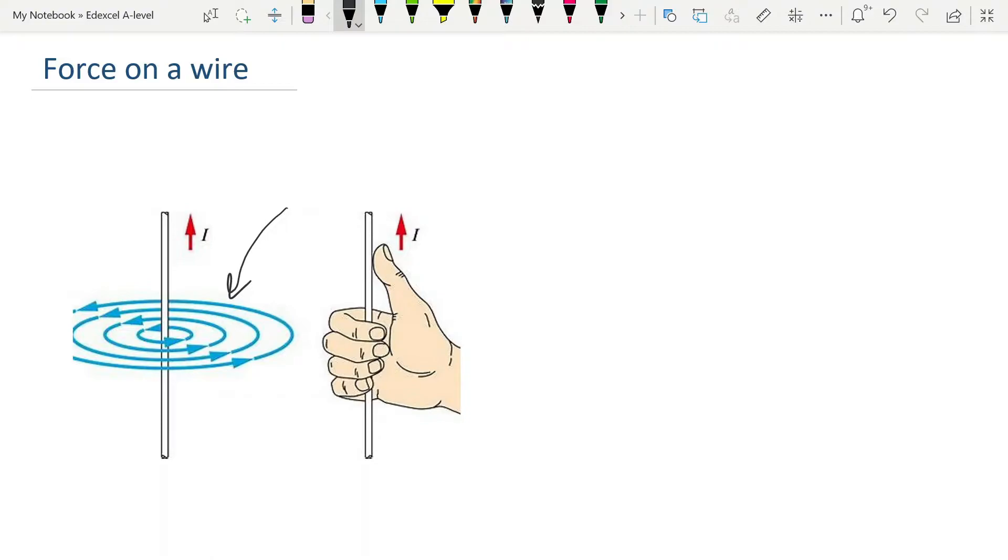You can figure out the direction of that field based on this right hand grip rule. Your thumb points in the direction of the current and then your fingers show you the direction of the magnetic field. As you can see here the current is upwards, the magnetic field is around in that direction. If the current goes in the opposite direction the magnetic field switches, remembering that it decreases in its field strength or flux density as you move out from the wire.